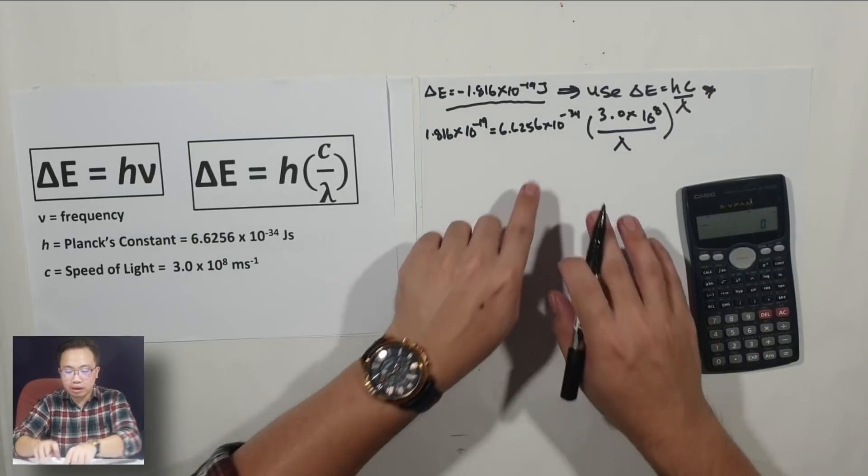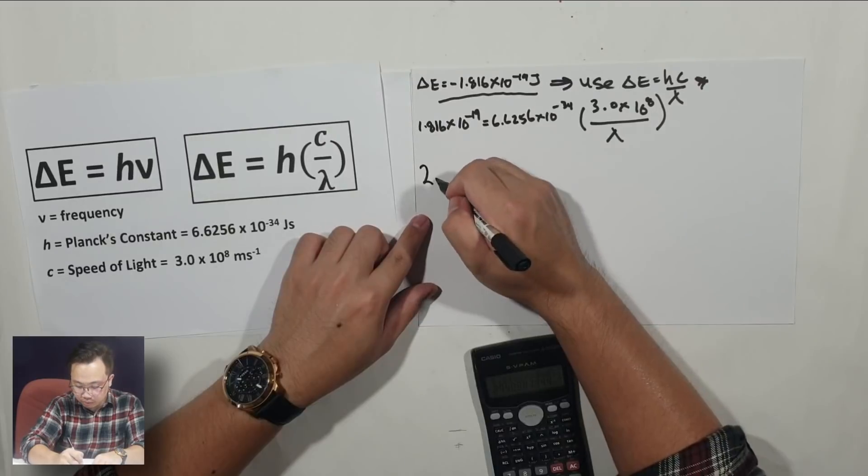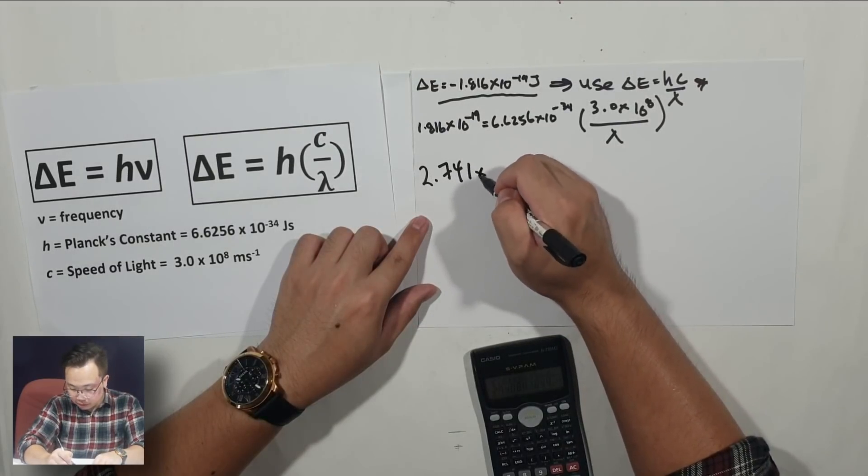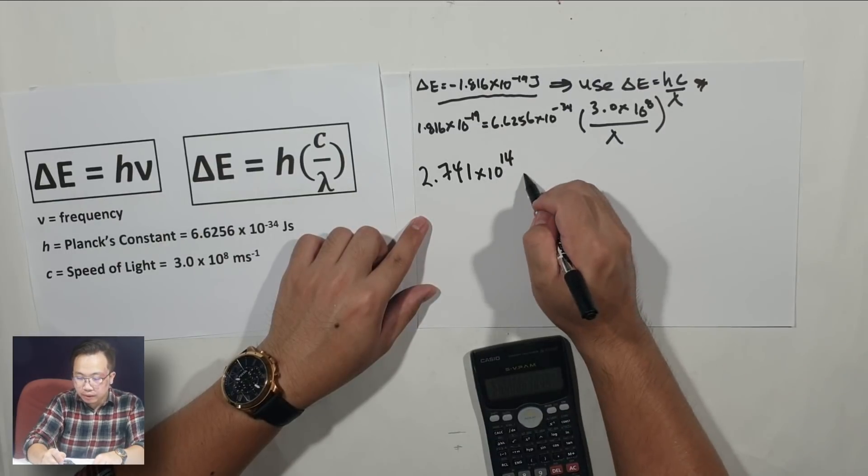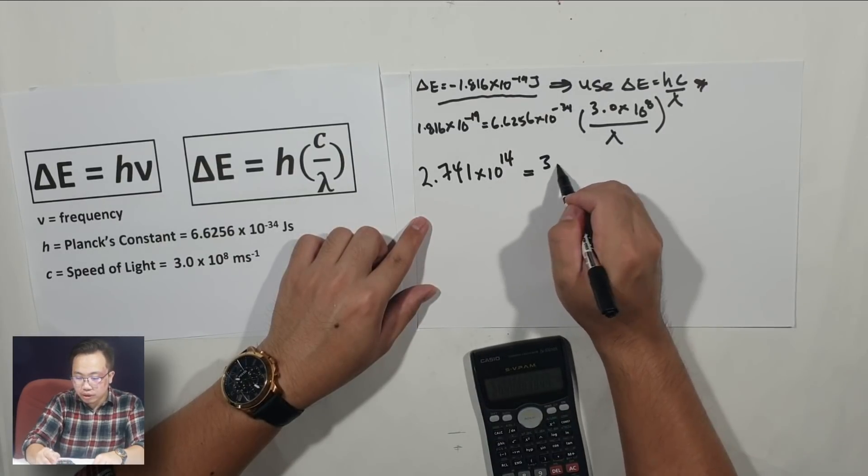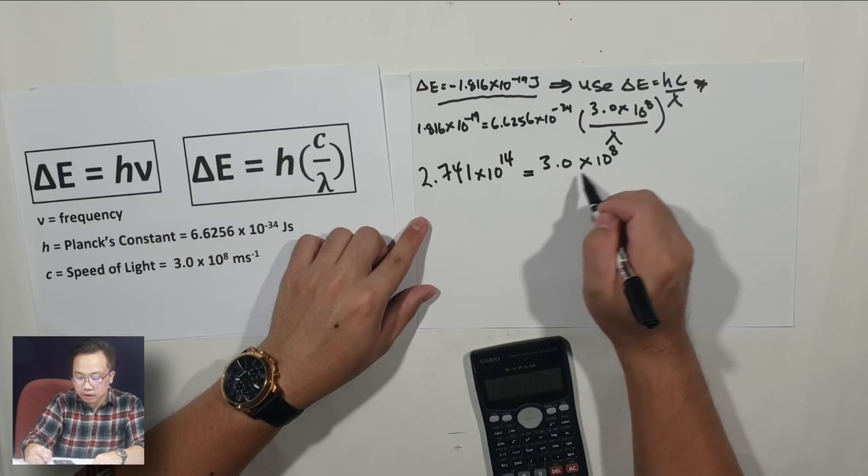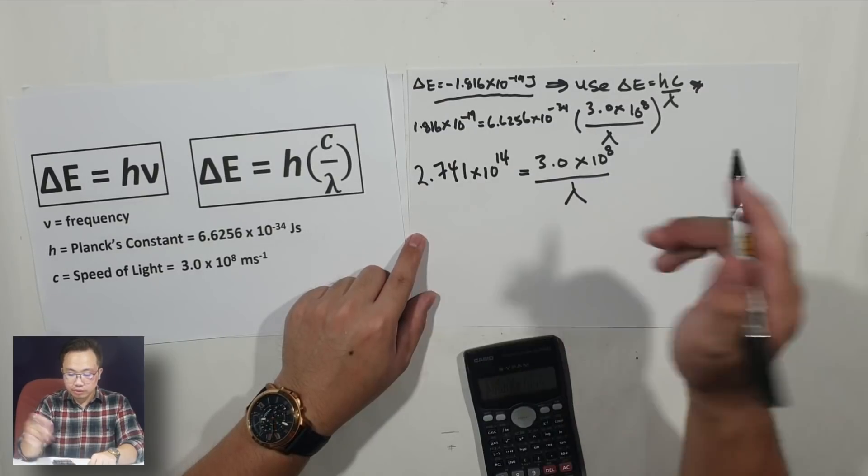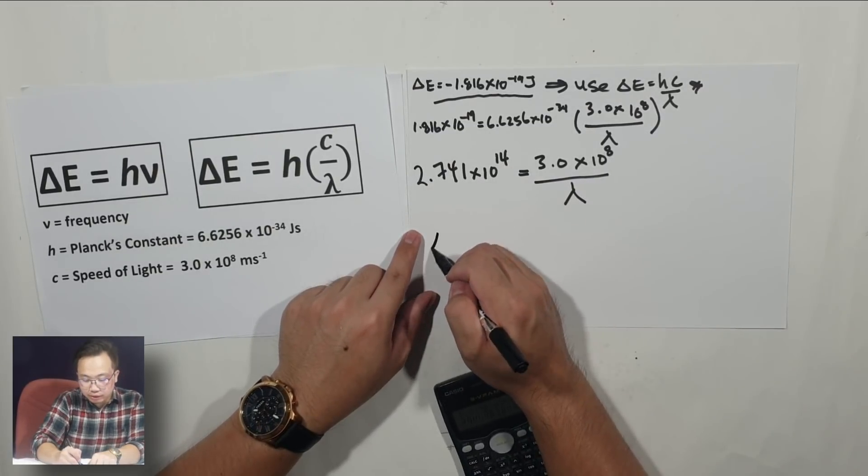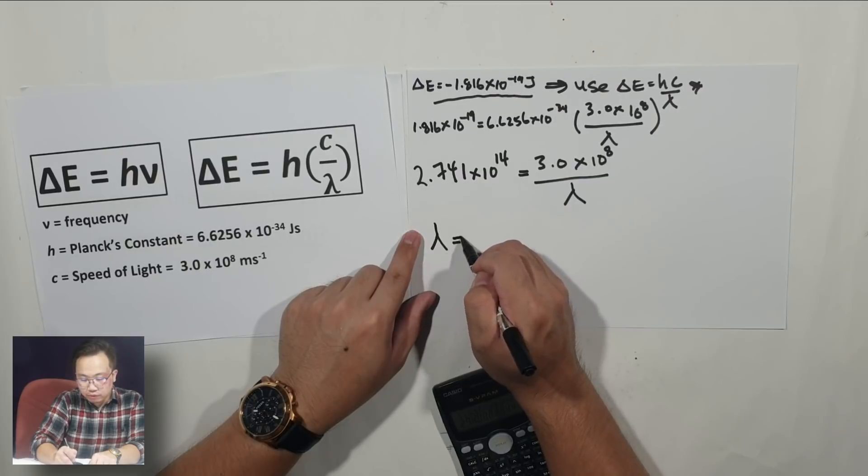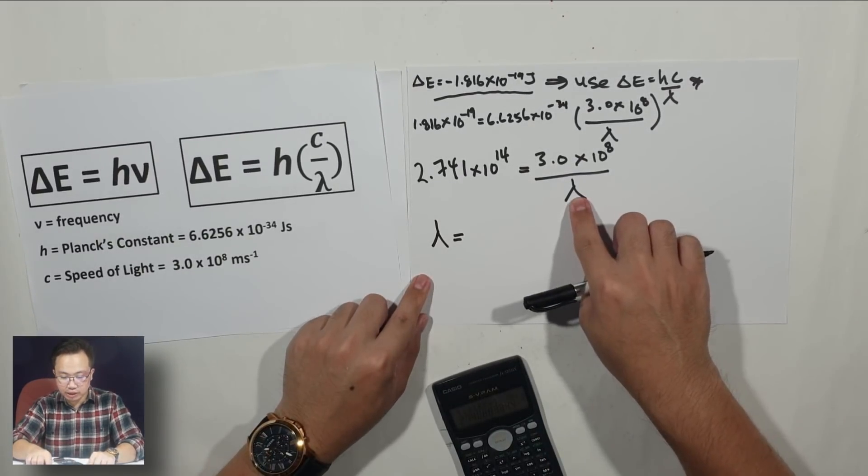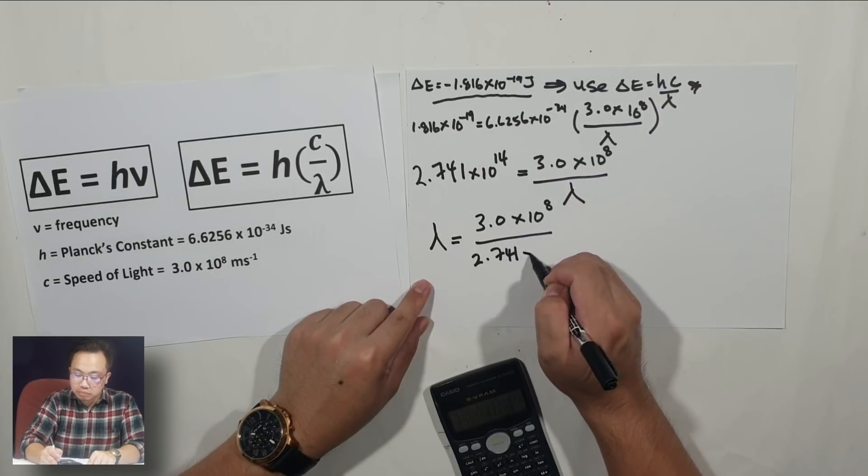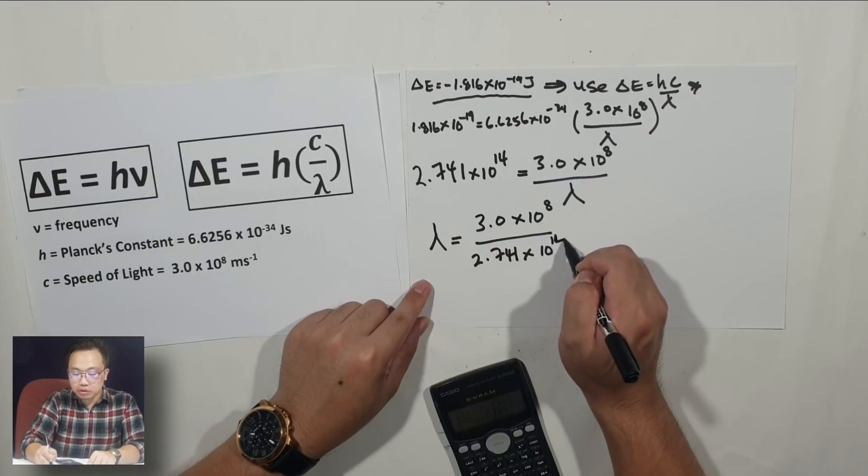2.741 times 10 to the 14 equals to 3.0 times 10 to the power of 8 over wavelength. Now, how do we get the wavelength? The wavelength, we're going to move this to the other side. 2.741 times 10 to the power of 14.